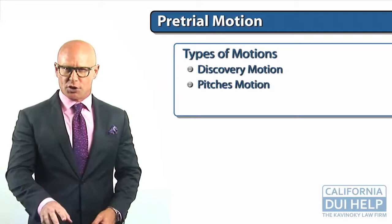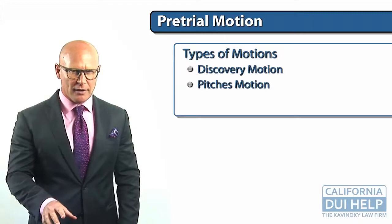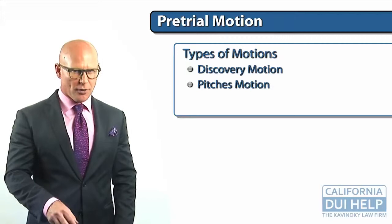A Pitchess motion is where you're trying to get information from the law enforcement officer's personnel file to see if anybody's made complaints against them for dishonesty, racial bias, or excessive force.